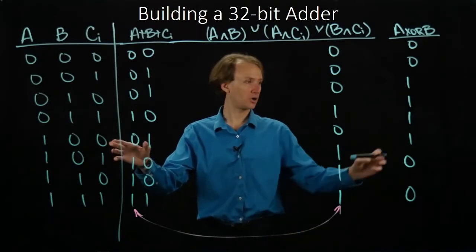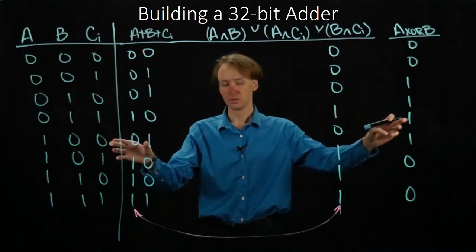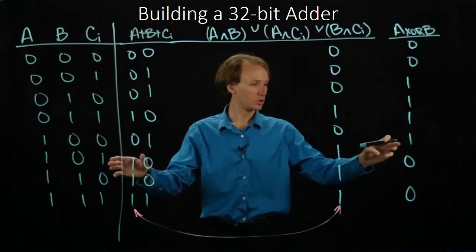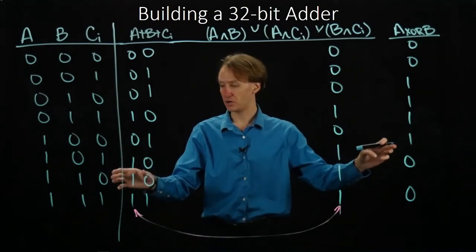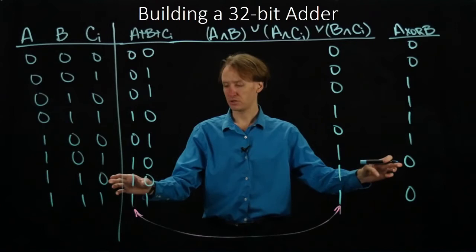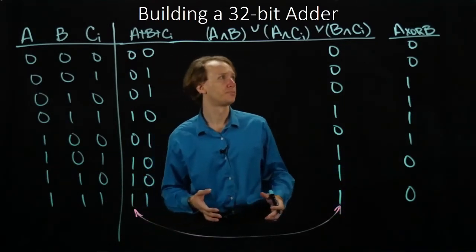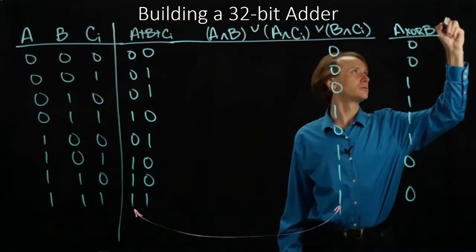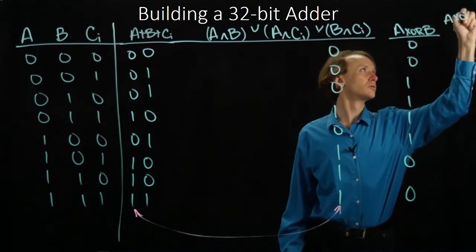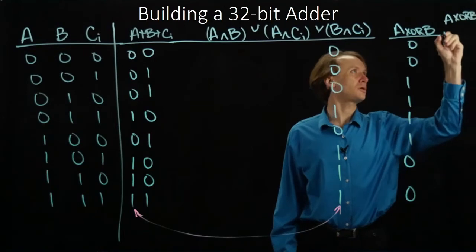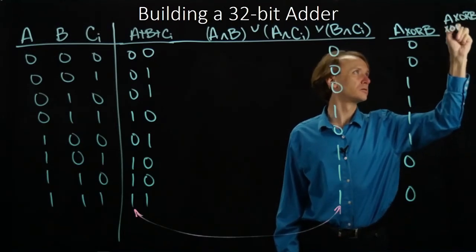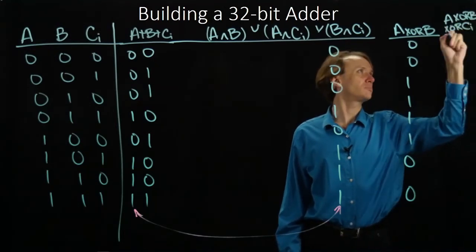Now I have 0 and 1, and that gives me 1. Okay, still an XOR. 1 and 1 gives me 0. 0 and 0 gives me 0. 1 and 0 gives me 1. So this looks like an XOR. So I'll take my A XOR B and I will XOR that with my carry-in bit.